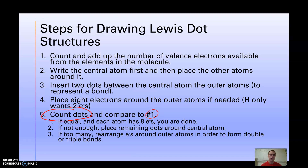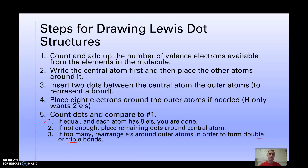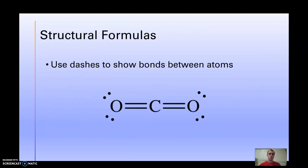Step five: count your dots and see if that number matches the total valence electrons from step one. If everything has eight electrons and the count is equal, we're good. If it's not equal or we don't have enough, place the remaining dots on the central atom. If we have too many electrons, we need to create a double bond or a triple bond.